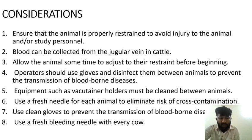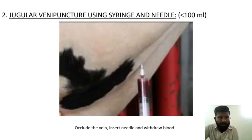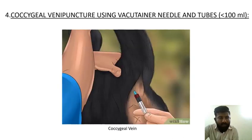Procedures to be followed: Jugular venipuncture using Vacutainer needle and tubes (less than 100 animals); Jugular venipuncture using bleeding tube (more than 100 animals); Coccygeal venipuncture using Vacutainer needle and tubes (less than 100 animals). Thank you for listening.